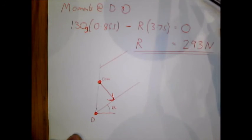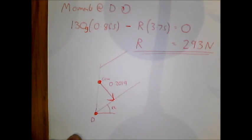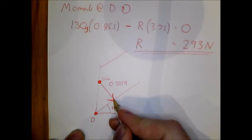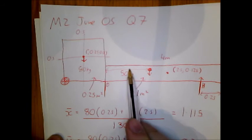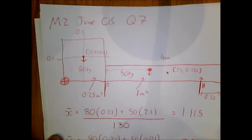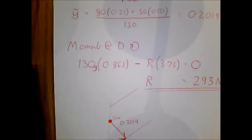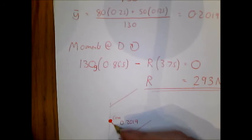So we know that this distance, perpendicularly down, is going to be the y bar. So that's 0.2019. And we know that this distance from point D, this distance here from point D, is the x bar minus 0.25. So 1.115 x bar minus 0.25. So we know this distance is 0.865.